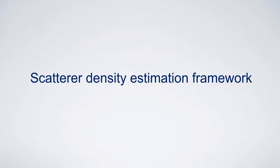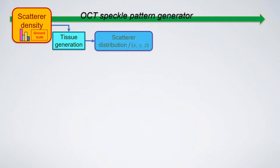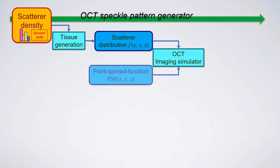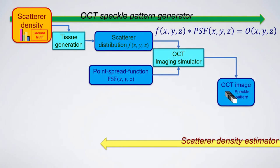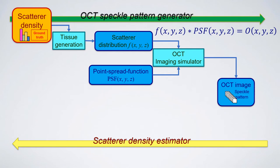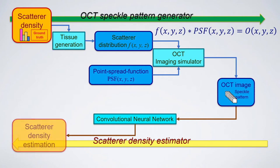Let me talk about the details of our scatter density estimation. By using this symmetry, we build a scatter density estimation framework which consists of two parts. The first part is a simple and fast 3D OCT speckle pattern generator that converts the scatter density to OCT speckle images — this is the forward process. The second part is a CNN-based scatter density estimator that estimates scatter density from the OCT speckle pattern — this is the backward process.